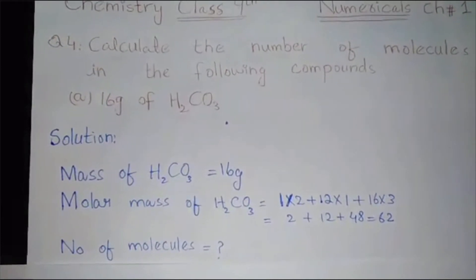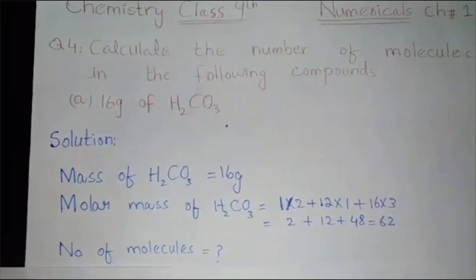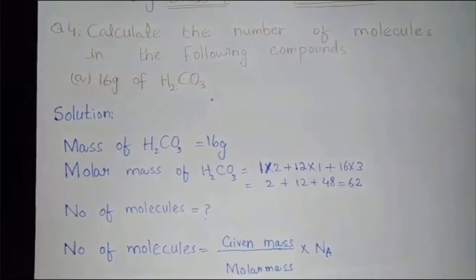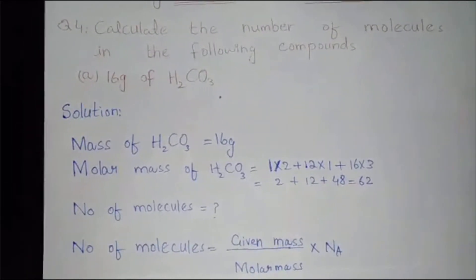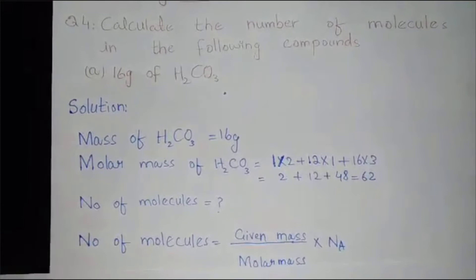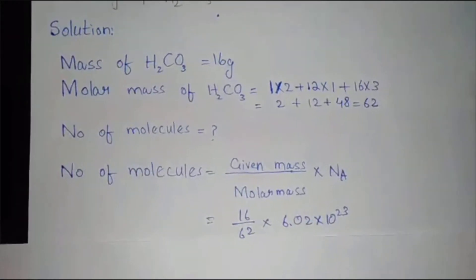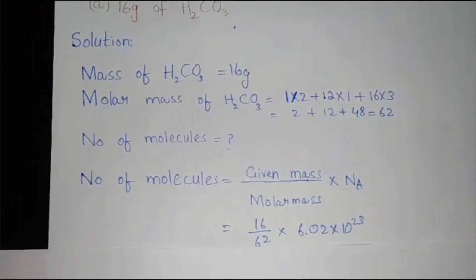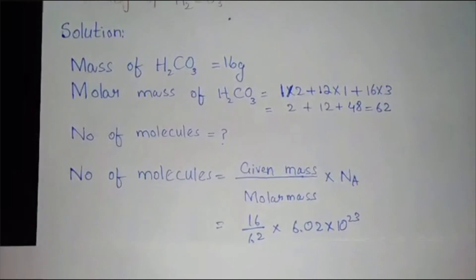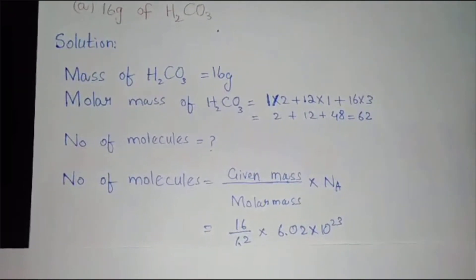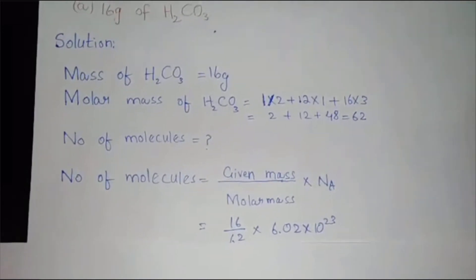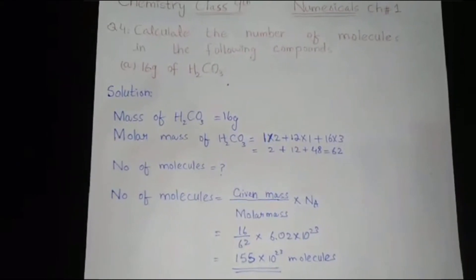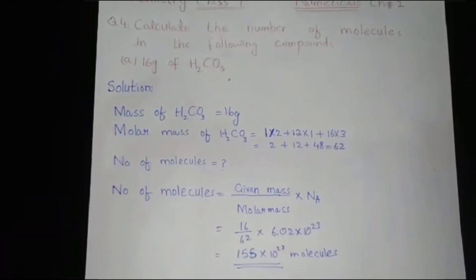Now we have to find the number of molecules. The formula is: number of molecules = (given mass / molar mass) × Avogadro's number. Calculating this gives 1.55 × 10²³ molecules.